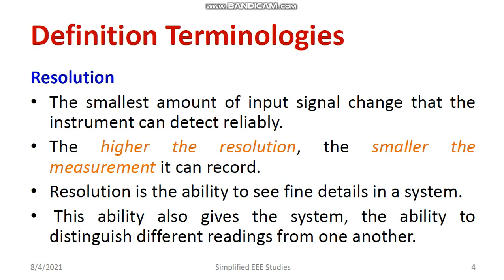Now let's understand what resolution means. Resolution is defined as the smallest amount of input signal change that the instrument can detect reliably. Higher resolution means the instrument can record smaller measurements — that is a positive quality for any measurement device. Resolution is the ability to see the fine details of the system, and it also gives the system the ability to distinguish the real measurement signal from noise.